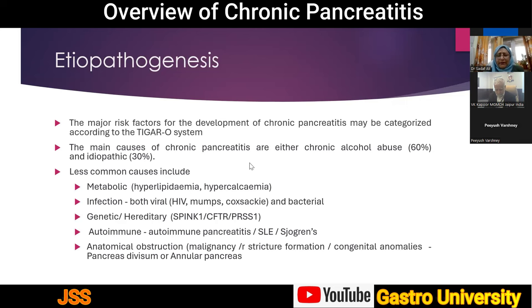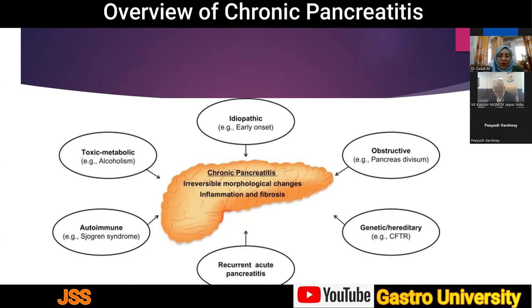Other causes of chronic pancreatitis include idiopathic causes, metabolic reasons such as hyperlipidemia and hypercalcemia, viral and bacterial infections, and genetic mutations. Hereditary causes include SPINK1, CFTR, and PRSS1 mutations. Autoimmune pancreatitis may be associated with conditions like SLE and Sjögren's syndrome. Anatomical obstruction from malignancies, stricture formation, or congenital anomalies like pancreas divisum or annular pancreas can also be responsible.